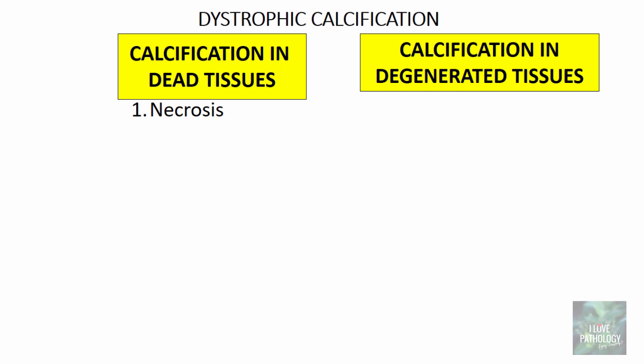The second type of necrosis where you can see calcification is liquefactive necrosis. Chronic abscess is an example of liquefactive necrosis, and sometimes calcification is seen in a chronic abscess cavity. Another type of necrosis where you can expect dystrophic calcification is fat necrosis — you can see dystrophic calcification in the pancreas, particularly after acute pancreatitis, because of the release of pancreatic lipases.